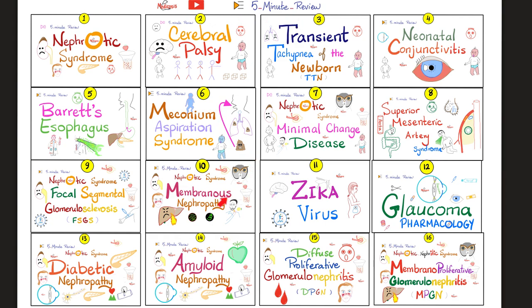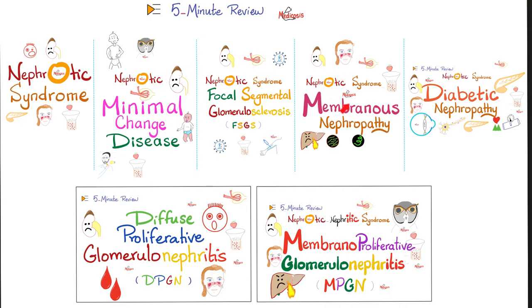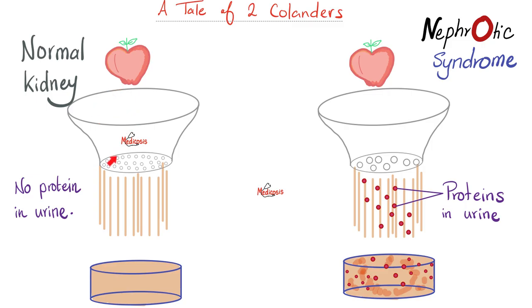For maximum understanding and retention, please watch my videos in order. The first four diseases are nephrotic syndrome; the last two are kind of between, so you can call them nephrotic-nephritic syndrome. A good kidney should not let protein in the urine and should not let red blood cells in the urine. A kidney with nephrotic syndrome, like a bad colander, lets protein into the urine.